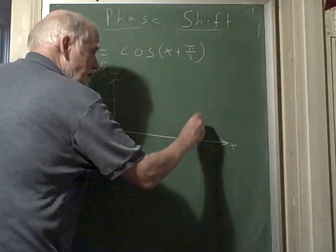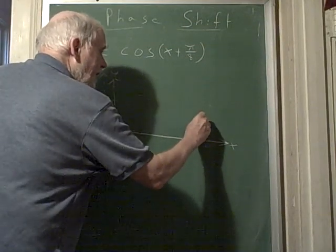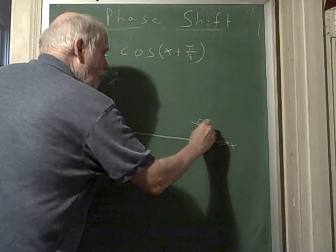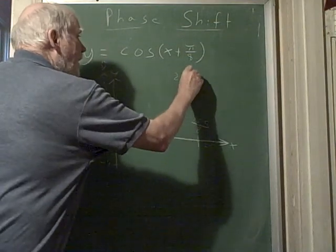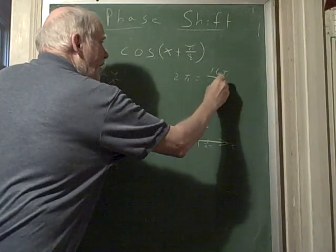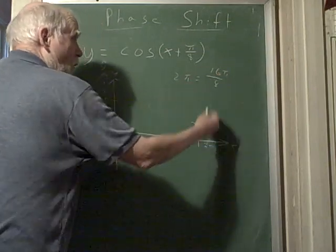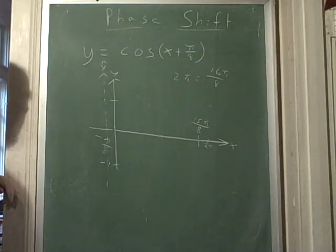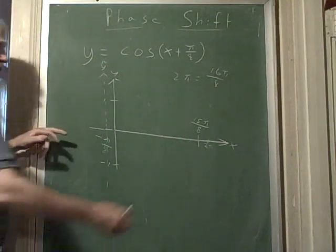Of course, this is 16 pi over 8. So this has to be 15 pi over 8, right? Because 2 pi equals 16 pi over 8, right? Reduces to 2 pi. So one less than that has to be 15 pi over 8. Notice I've established these two here.